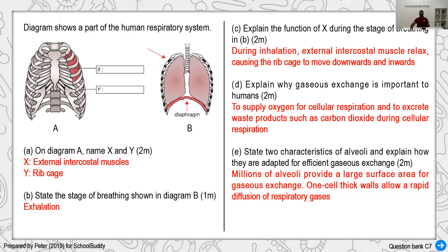The next question concerns characteristics of the alveolus and its importance for gas exchange. Like villi in the digestive system, alveoli are numerous — millions in number — giving a large surface area for efficient gas exchange. The alveolus wall is also very thin (one cell thick), so gas exchange occurs easily across it.